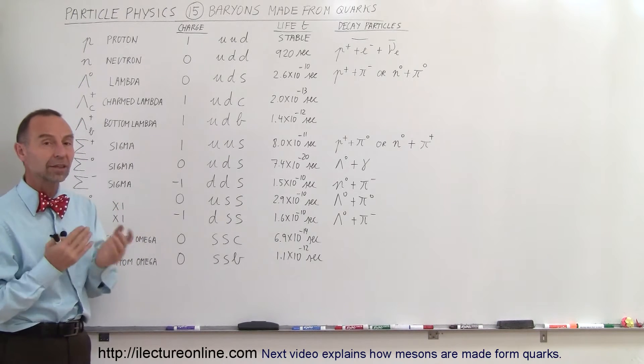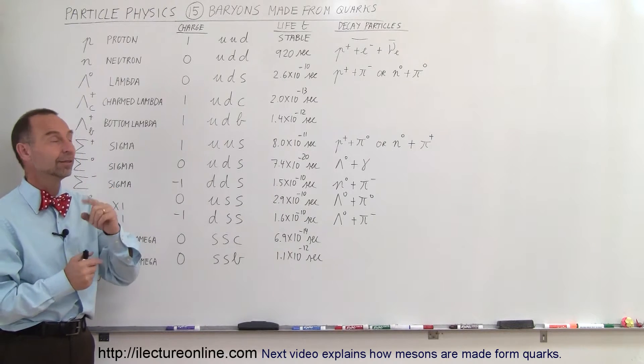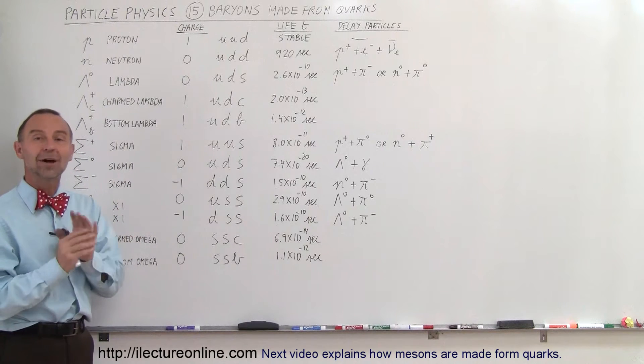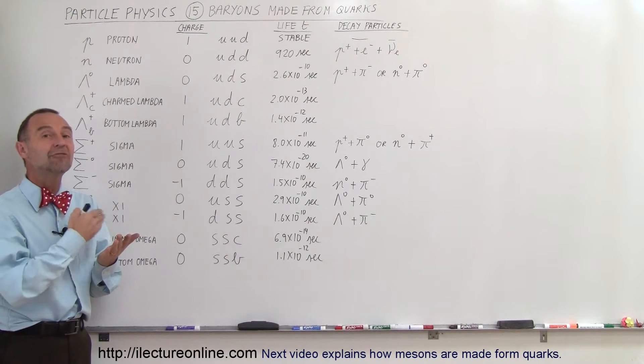So let's take a look at the baryons that they create and notice of all the baryons they create, there's only one, a proton, that is stable. All of the particles made from quarks end up being unstable and decay very quickly.